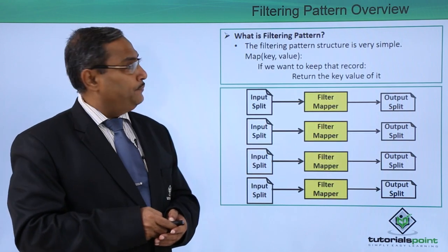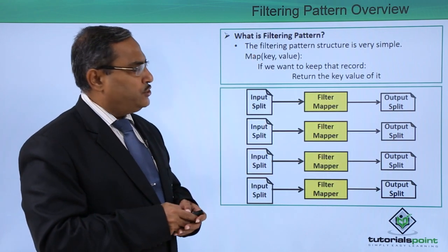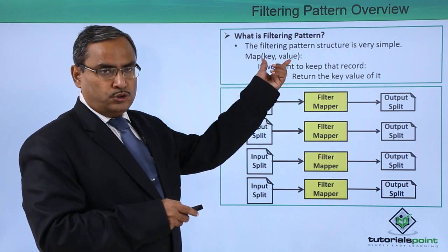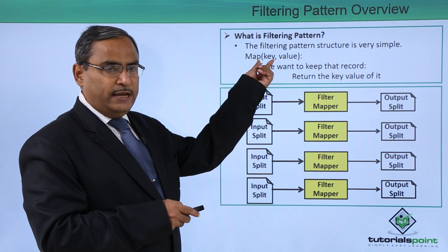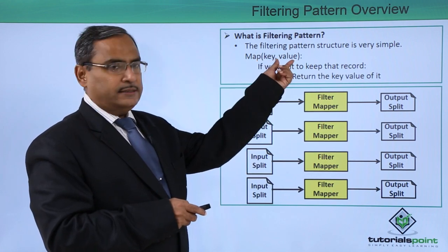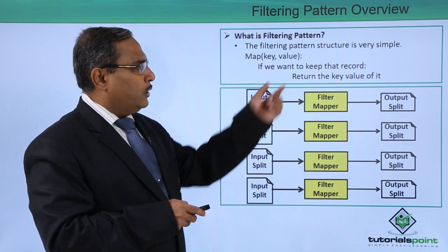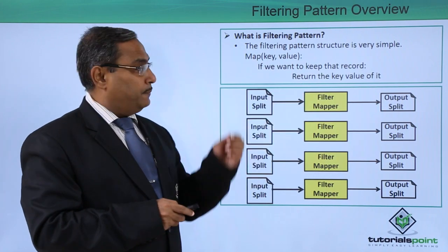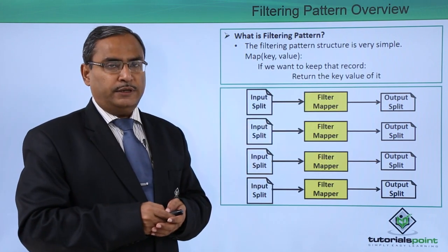What is filtering pattern structure? The filtering pattern structure is very simple: map key value. Map is having the key value pair. This is the key and this is the respective value. If we want to keep that record, return the key value of it. That means it will return the key value of the respective record.